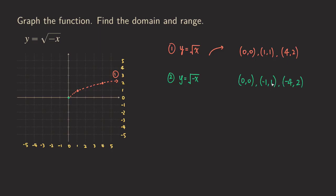If you plot those points, negative one one gives us this point here, and negative four two is at negative four on x and two on y. You can see that the y values don't change but the x values become opposite. So we are really just reflecting this parent function about the y-axis, and we get the same shape but reflected to the other side — like a mirror. The shape of the graph will look like this. We connect the dots and make a solid curve, and this is the one that we want — curve two.